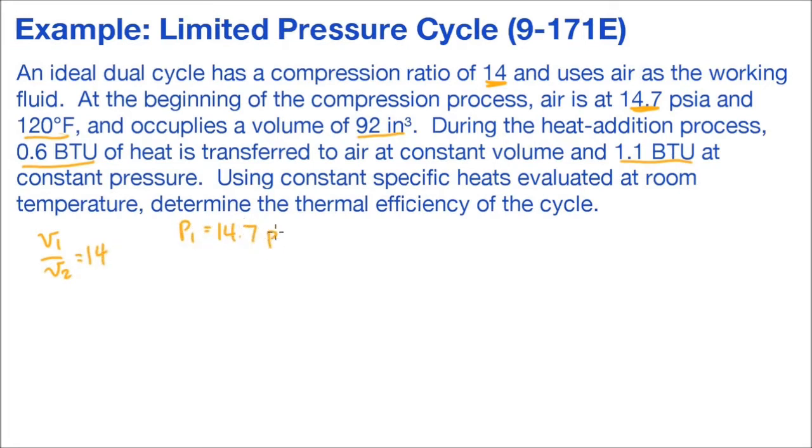So here we have our compression ratio of 14, our input pressure, our input temperature in Fahrenheit - we convert that to Rankine, that's 580R. The input volume is 92 cubic inches. We're given the total amount of heat at constant volume, it's 0.6 BTU, and at constant pressure, 1.1 BTU.